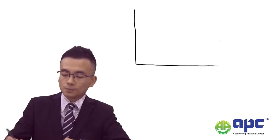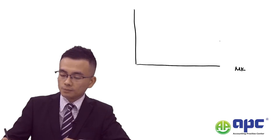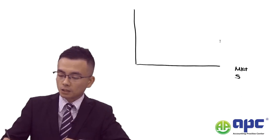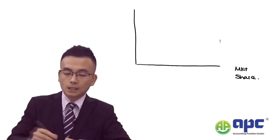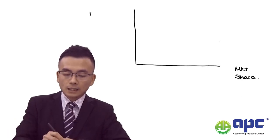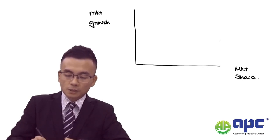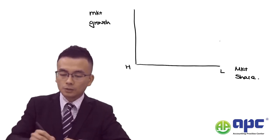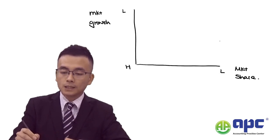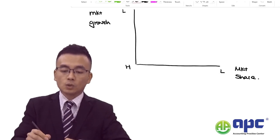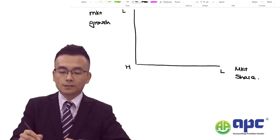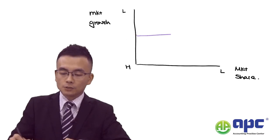We divide each SBU by relative market share and market growth — or revenue growth in the market. Each can be high or low, and based on these two axes (x and y), we divide them into four different categories.